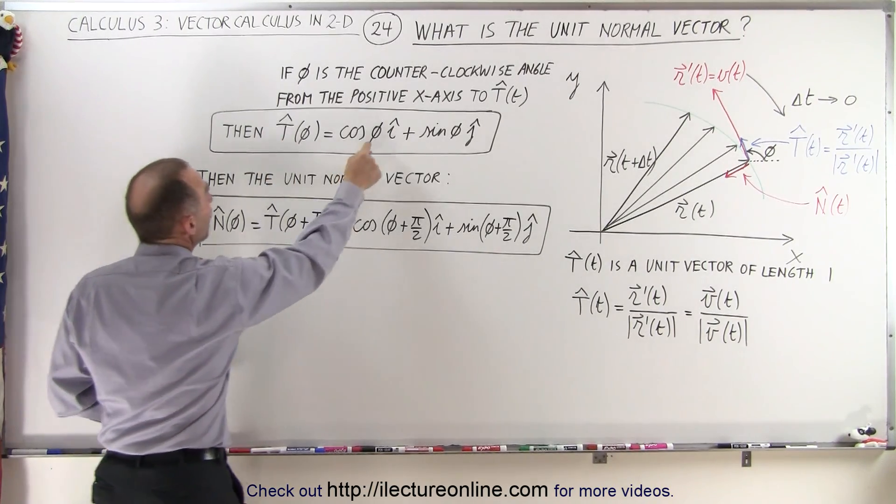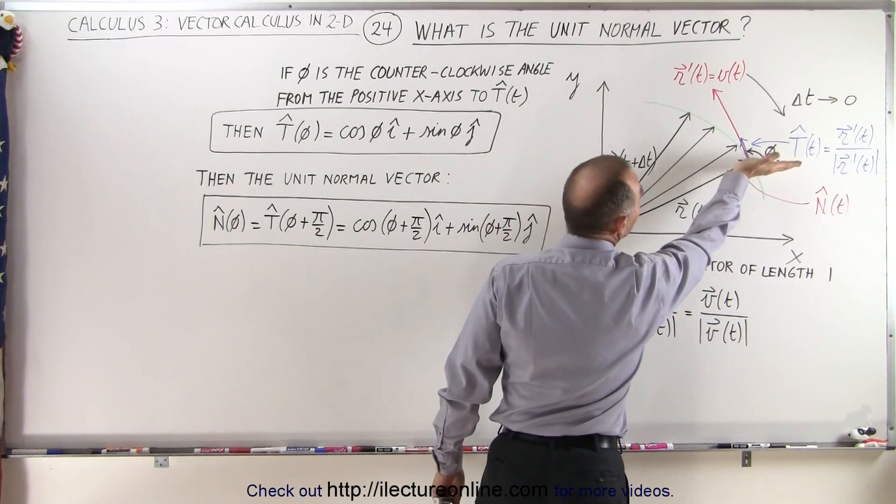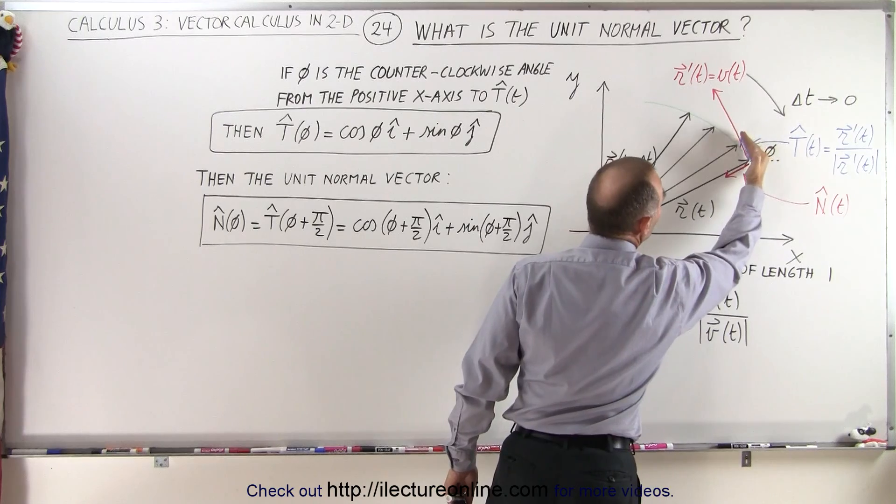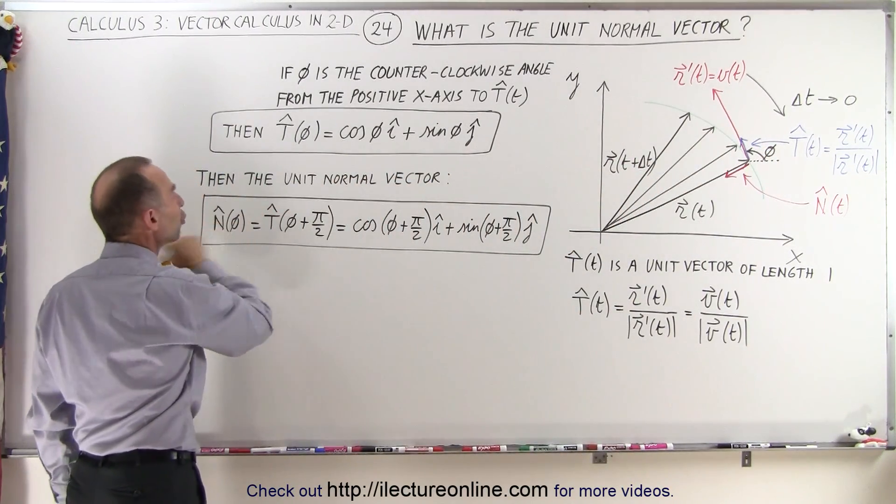So starting from the unit tangent vector, we add 90 degrees to the angle, which is the angle between the x-direction and the direction of the unit tangent vector, and then we get the unit normal vector.